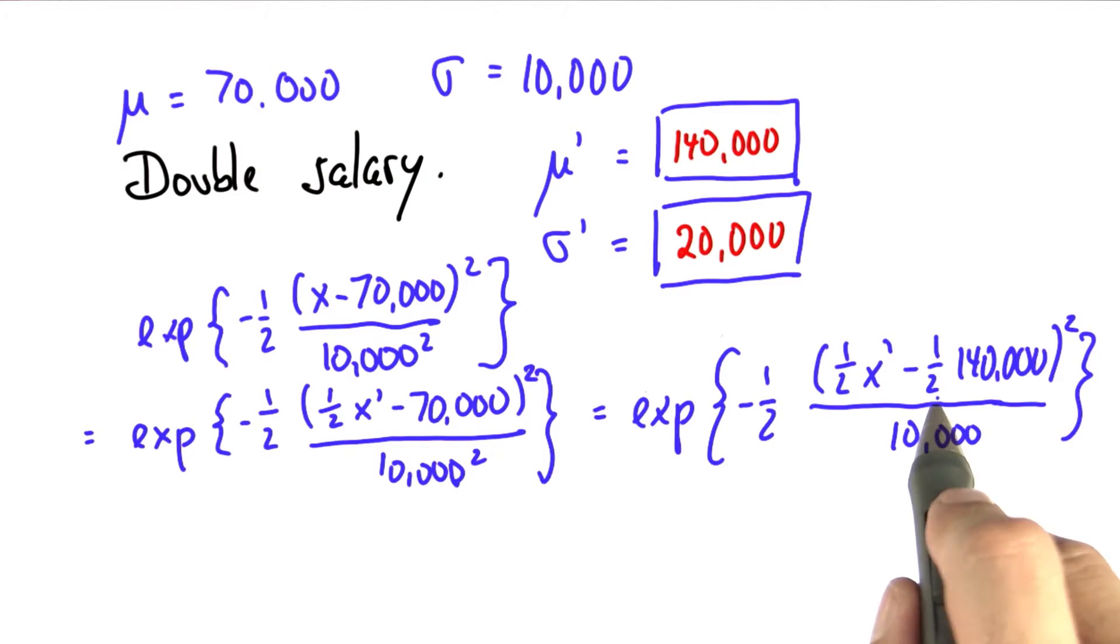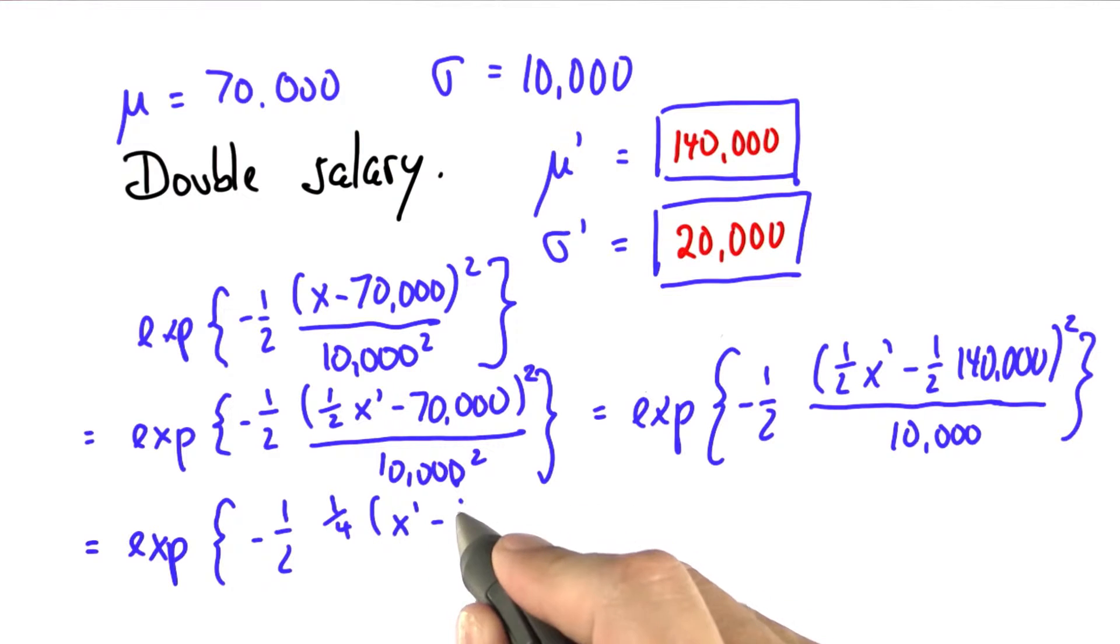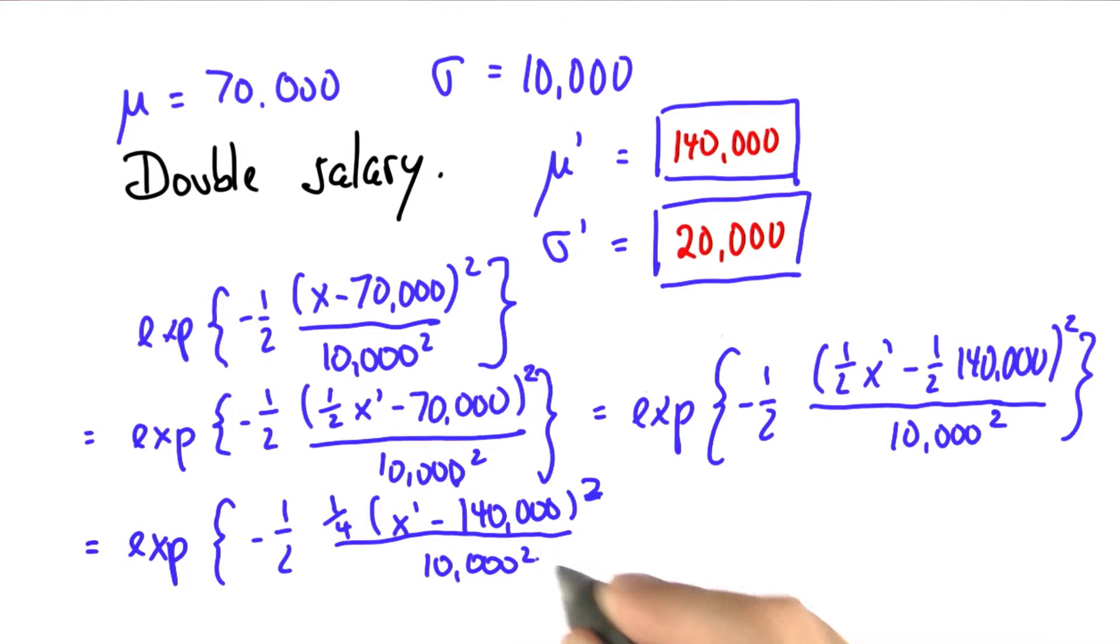With that, I can now bring the half out of the square over here, which gives me a quarter. You have to square the half of x prime minus 140,000 square over 10,000 square.